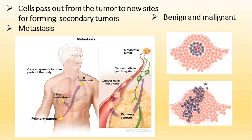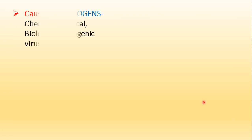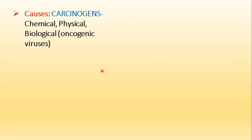Benign tumors do not show metastasis and are also known as non-invasive, whereas malignant ones show metastasis and invade other body parts. Benign tumors may stop their growth after reaching a certain size, so they are not very dangerous, but malignant ones show indefinite growth. Benign tumors are less fatal, whereas malignant ones are more fatal because of their ability to exhibit metastasis.